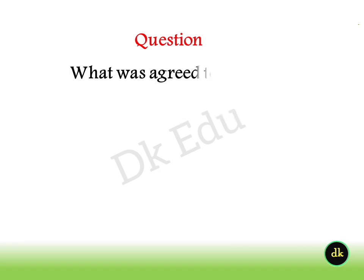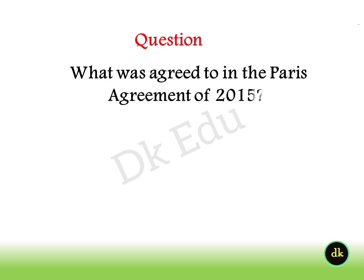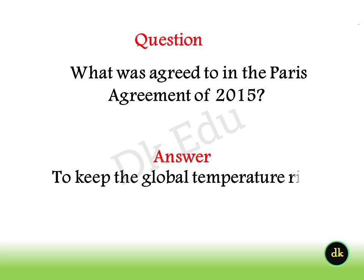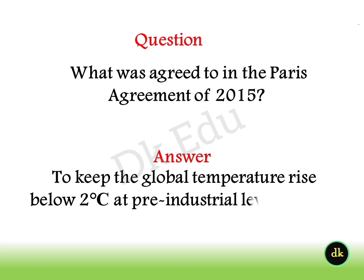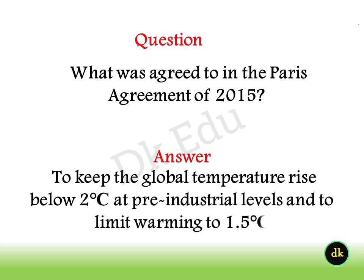What was agreed to in the Paris Agreement of 2015? Answer: To keep the global temperature rise below 2 degrees Celsius above pre-industrial levels and to limit warming to 1.5 degrees Celsius.